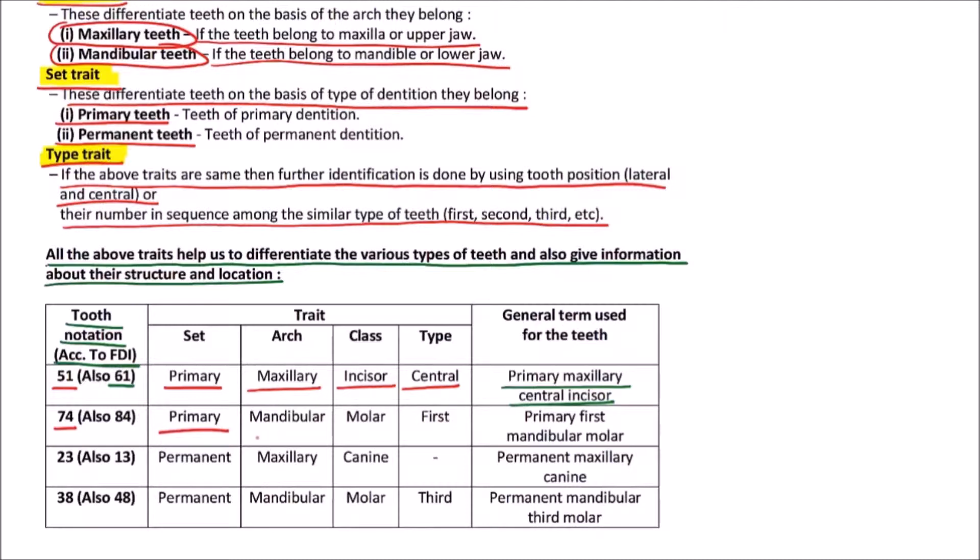Which is in the same arch but in opposite quadrant but at the same position. Next is 74: set is primary, arch is mandibular, class is molar, and type is first. So the general term is primary mandibular first molar. This is also applicable for 84, which is present at the same position but in opposite quadrant of the same arch.